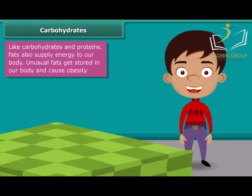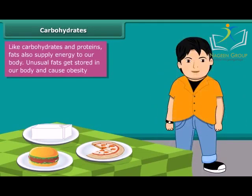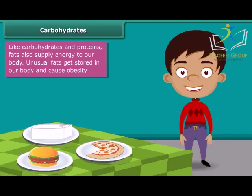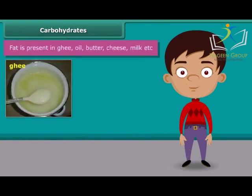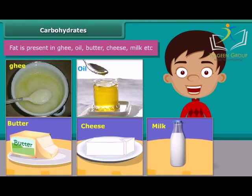You all love pizza, burger, cheese, etc., but your parents do not allow you to eat them regularly because such foods contain large amounts of fat. Fat supplies us with energy. If we don't use up this energy, our bodies build up a store for future use in the form of body fat. This is the reason why people eating much oily food become obese. Ghee, oil, butter, cheese and milk are some main sources of fats.